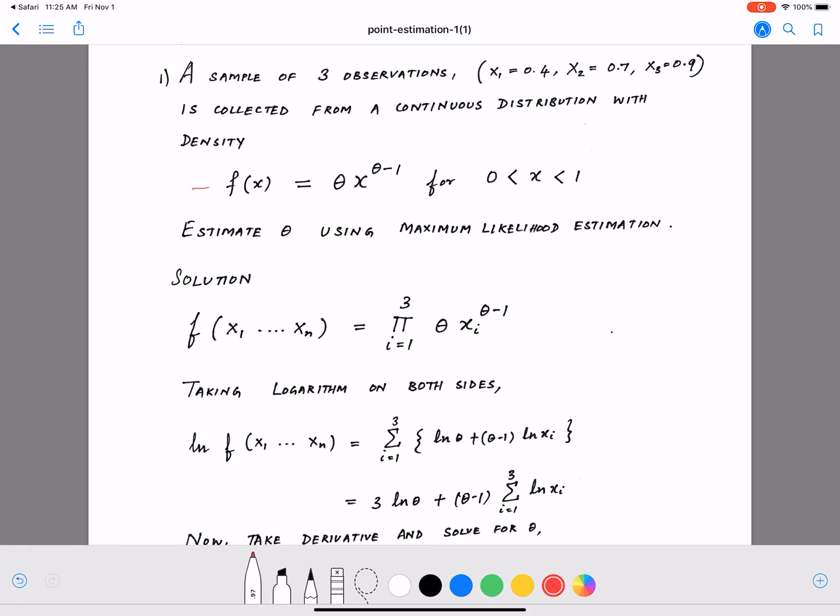For this distribution where f(x) equals theta x raised to theta minus 1, to proceed with the solution, we need to determine the joint distribution. For f(x1) to f(xn), all different points sampled from that distribution, what is the joint distribution? That is what we need to come up with first.